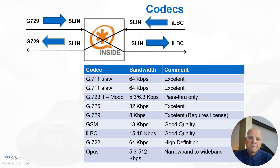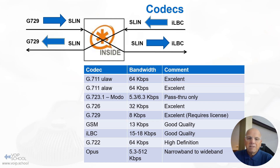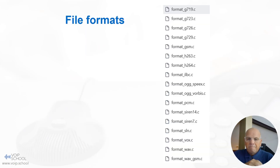Asterisk is capable of encoding and decoding all these codecs and translates in real time, transparently — you don't need to configure it. There's an internal format called S-linear, which is a PCM format. All codecs are converted to S-linear and then converted back to another codec — that's how Asterisk works.